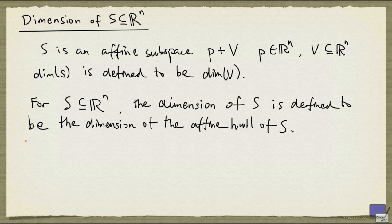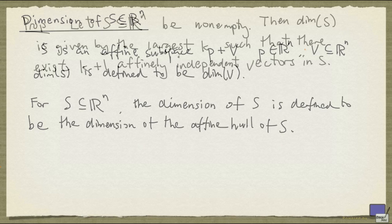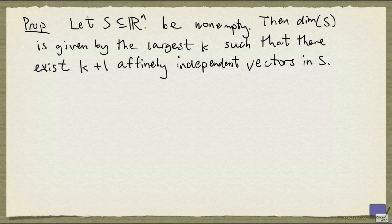We're now going to look at a result on determining the dimension of a set. Let S be a non-empty subset of R^n. Then the dimension of S is given by the largest k, such that there exists k plus 1 affinely independent vectors in S.